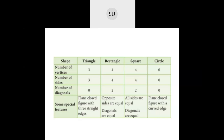Coming to rectangle: a rectangle has four vertices, four corners, and two diagonals. Its opposite sides are equal — the length is equal and the width is equal — and its diagonals are also of equal length. It is a plain closed figure with four straight sides. Then square: a square has four vertices, four sides, and two diagonals. All four sides are equal and the diagonals are also equal in length.